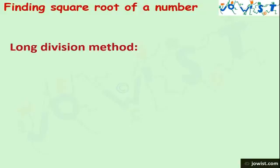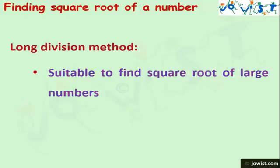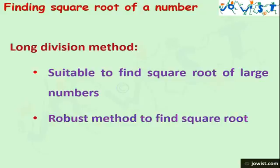Repeated subtraction method and prime factorization method are generally used for small numbers, but the long division method is suitable to find the square root of large numbers. It is a robust method because we can find the square root of decimals also. Through long division method we can also find the square root of non-perfect squares up to decimal places.